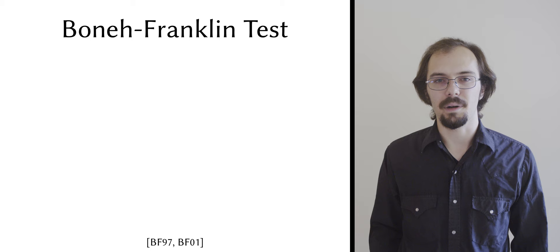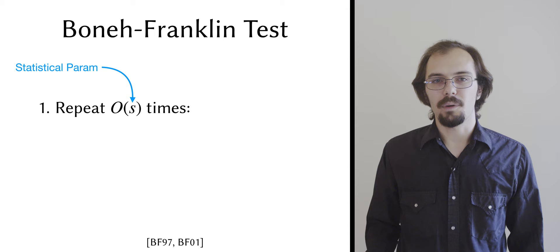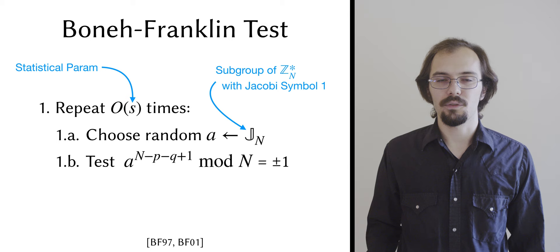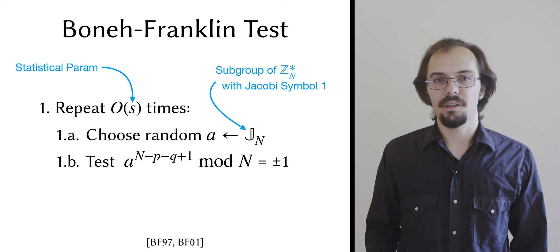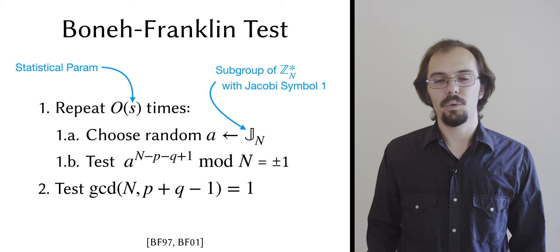For some statistical parameter number of iterations, they choose a random base a with Jacobi symbol 1 and take it to the power of n minus p minus q plus 1 modulo n. If this is equal to plus or minus 1 in all iterations, then the test passes. For technical reasons, they also require a GCD test, but we won't worry about this for now.